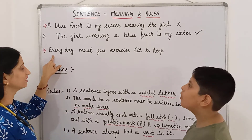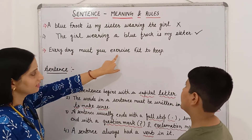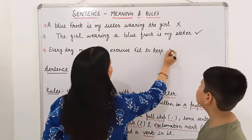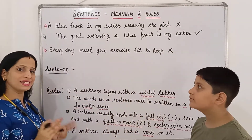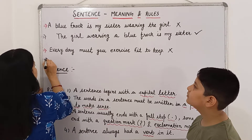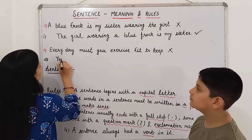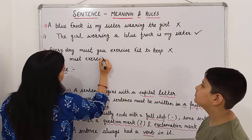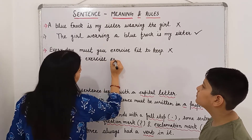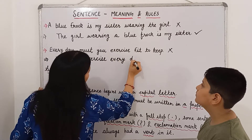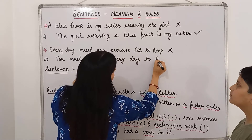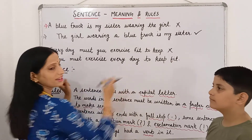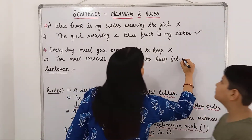Similarly, now read this one: 'Every day must you exercise fit to keep?' This group of words is not making any sense. So we will arrange these words to make it a sentence. The sentence will be: 'You must exercise every day to keep fit.' Now this group of words is making sense, so this will be considered as a sentence.